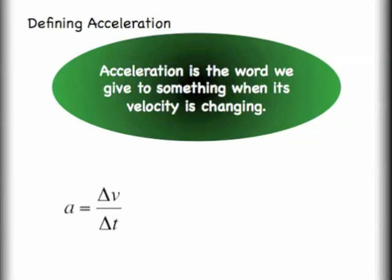The equation that we'll use to describe acceleration is acceleration equals delta v over delta t. Remember delta means change in. It's always final minus initial, so we're saying the final velocity minus the initial velocity divided by a time interval, the final time minus the initial time.